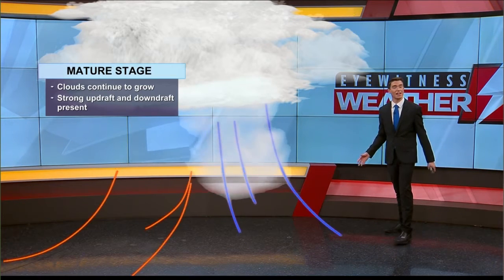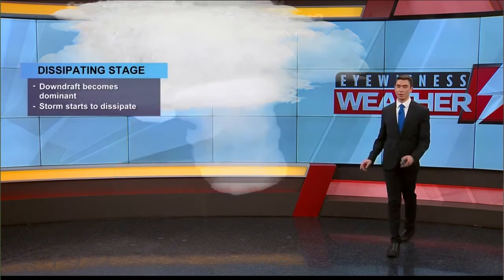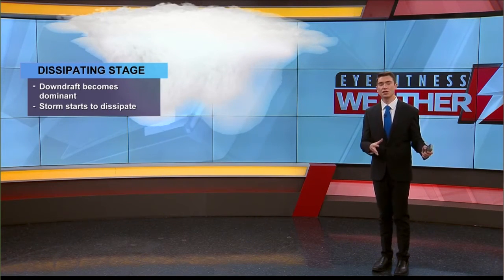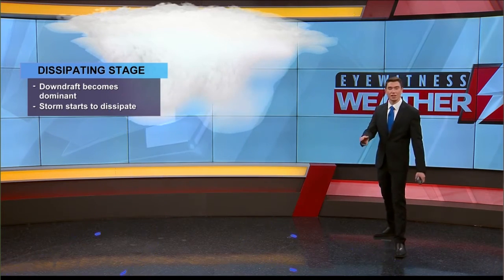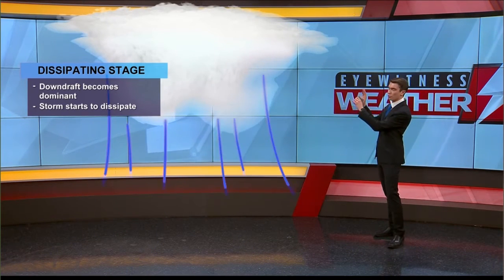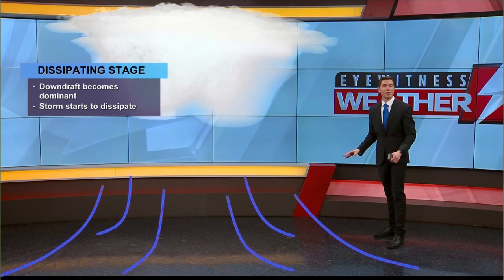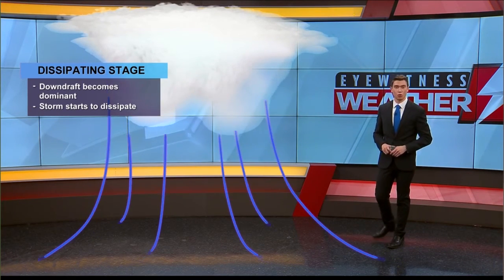We're also talking about the downdraft. What goes up must come down, and that is the downdraft — descending air that spreads out and oftentimes creates damaging winds at the surface, which is where we often hear damage reports. This is the dissipating stage of a thunderstorm. We don't get that warm, moist air rising anymore; the downdraft becomes more dominant and helps to dissipate the thunderstorm.